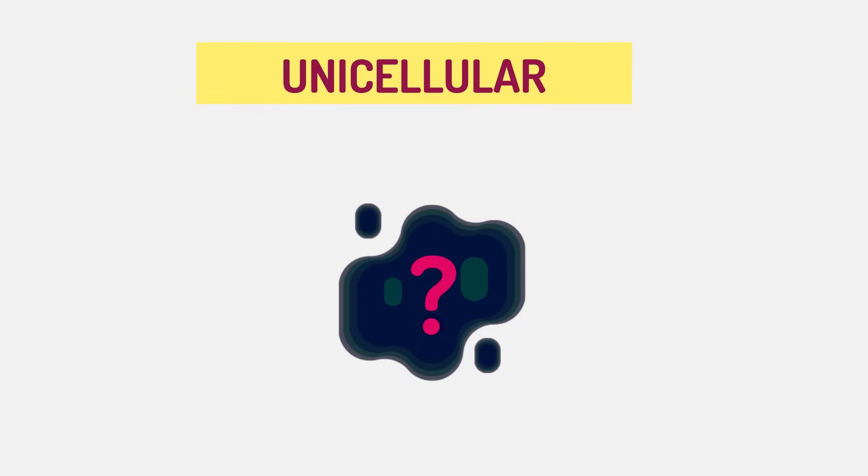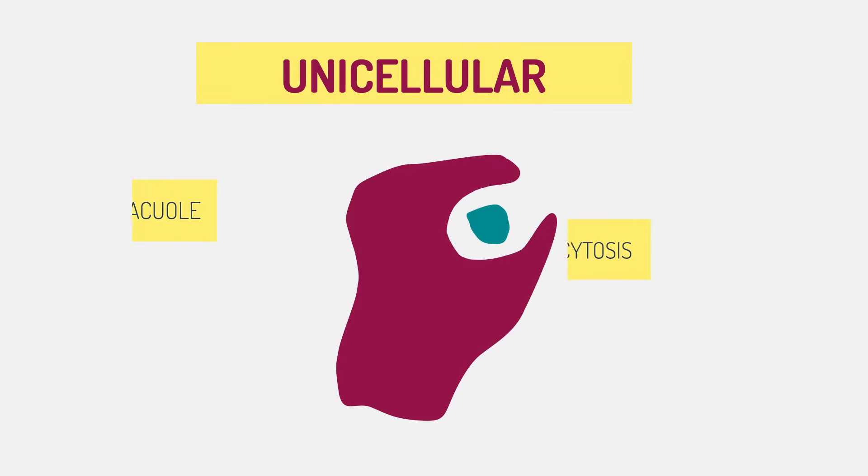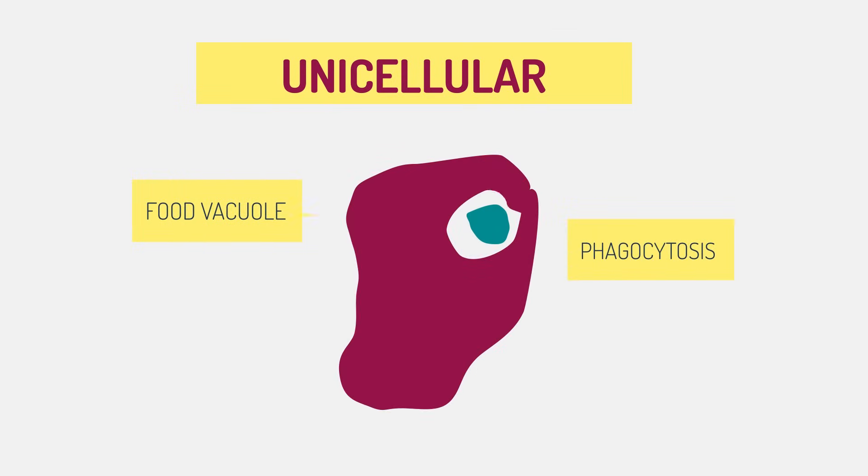How does a single cell manage nutrition? Usually by phagocytosis, where the food is engulfed and then stored in food vacuoles inside the organism.